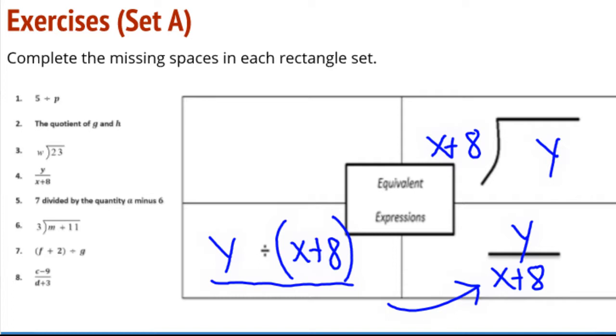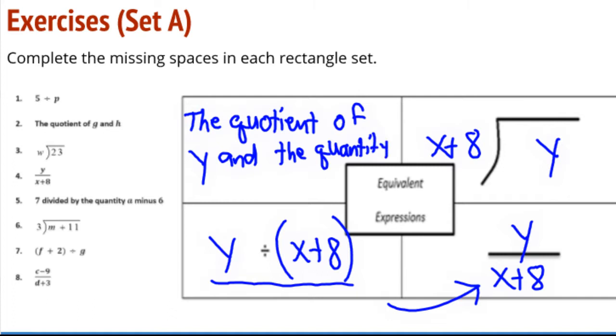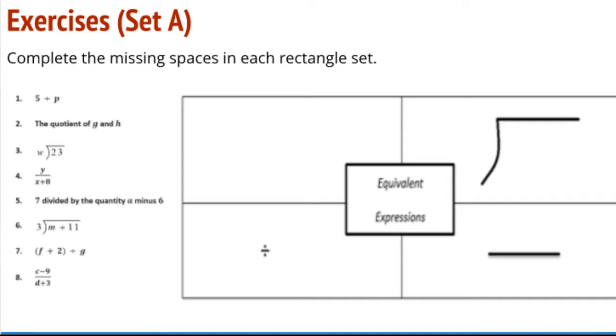The last one. These are probably the hardest ones when we write them in words. So I have the quotient of Y and the quantity of X and 8. I could also express this using some different words here. So the quotient of Y and the sum of X and 8. And I kind of like using some of that math vocabulary, the word sum is a nice one. So that's a couple of examples from set A.